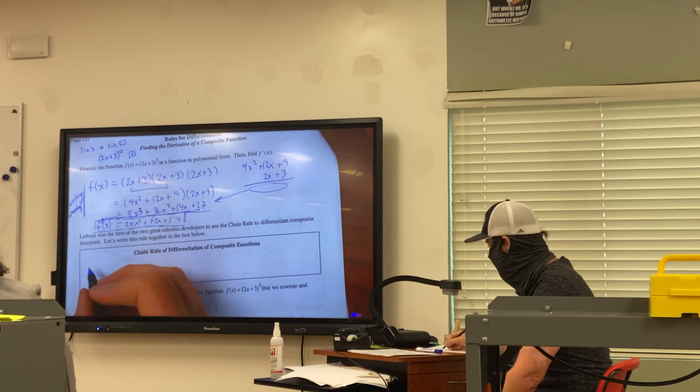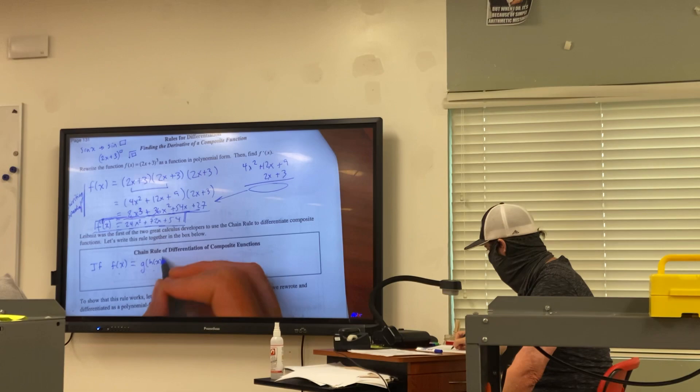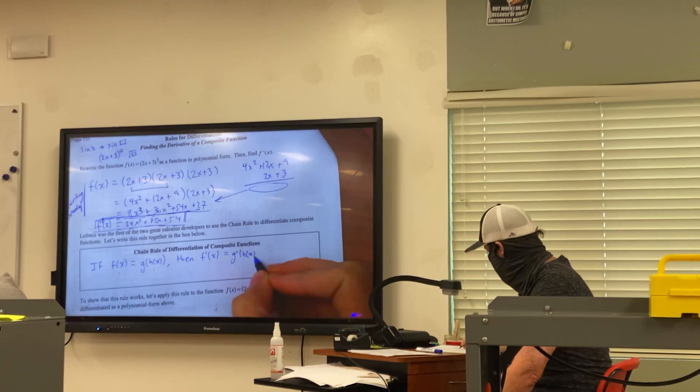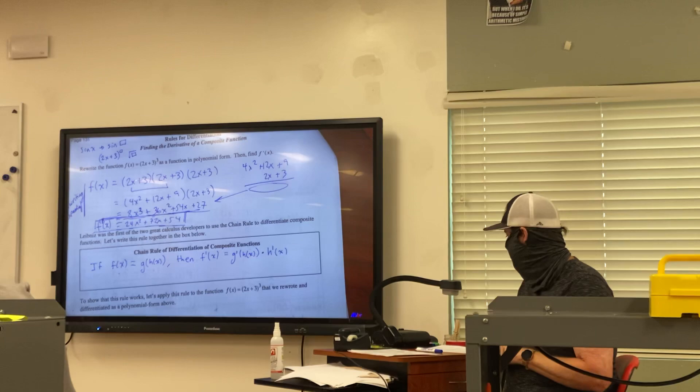And so basically his notation, I'm going to give you his notation, and then I'm going to give you mine. So his notation is if f of x equals g of h of x, then f prime of x equals g prime of h of x times h prime of x. That looks kind of nasty.